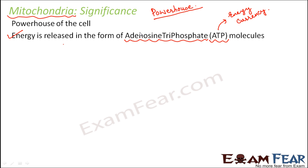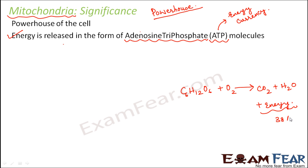ATP consists of three phosphate groups attached to an adenosine molecule — you will learn more about its structure and chemical composition in higher classes. During the process of respiration, mitochondria convert glucose, which is oxidized to produce carbon dioxide, water, and energy — around 38 ATP molecules. That is why mitochondria is called the powerhouse of the cell.